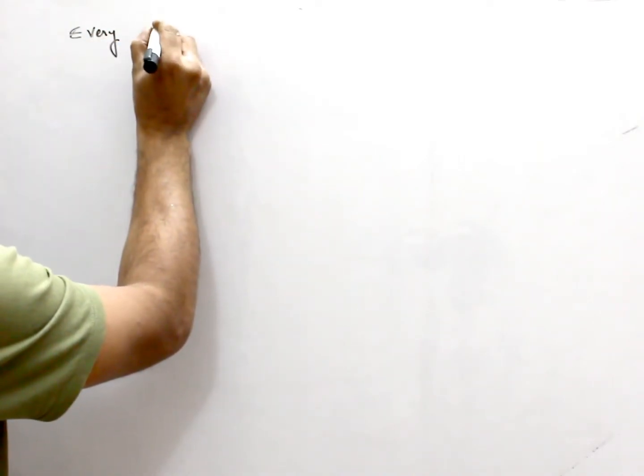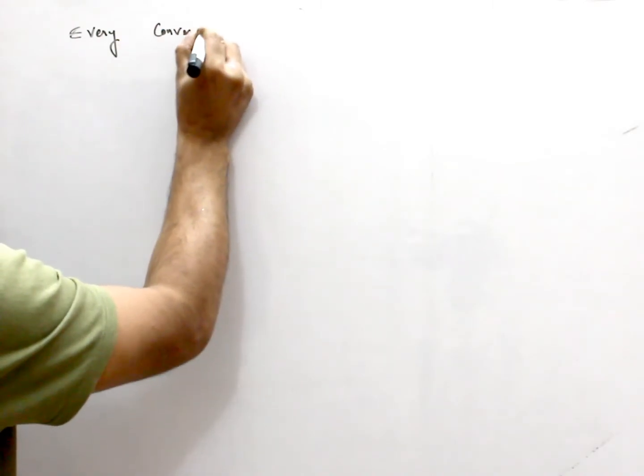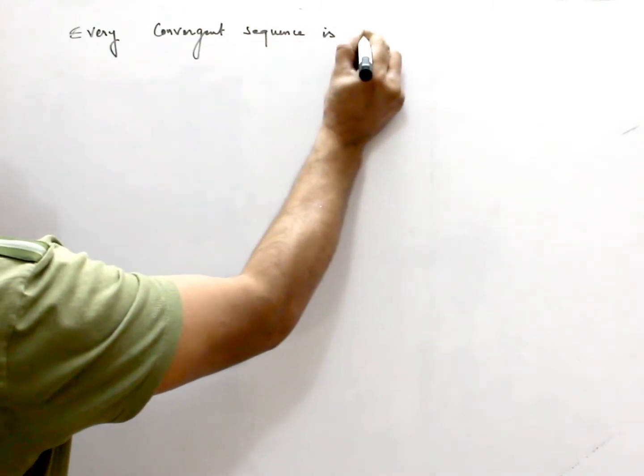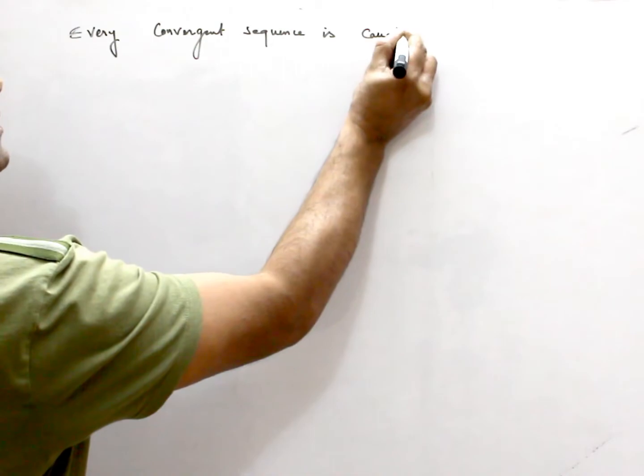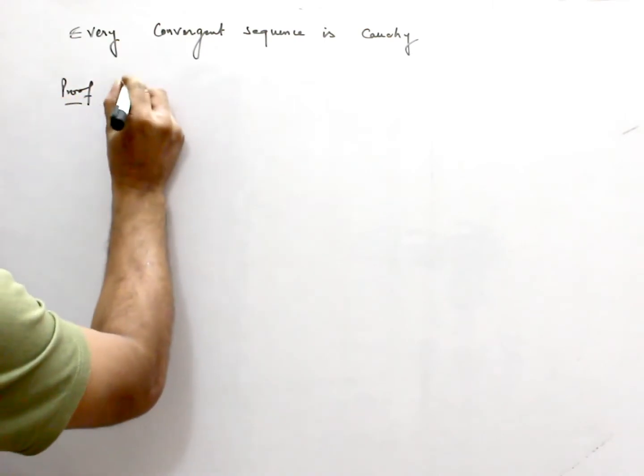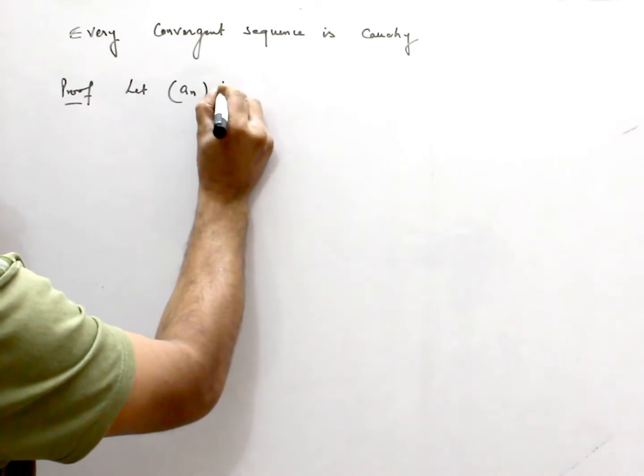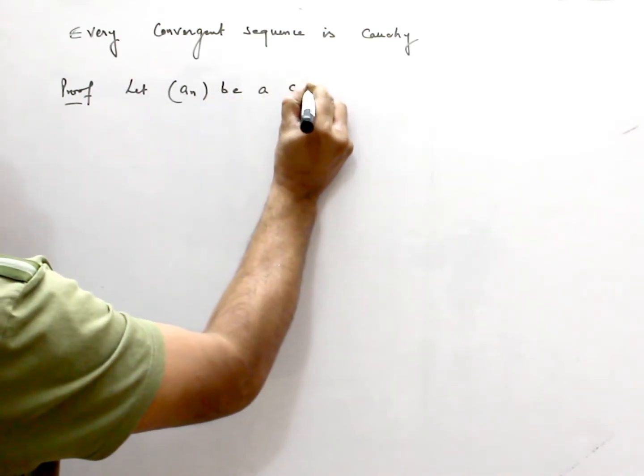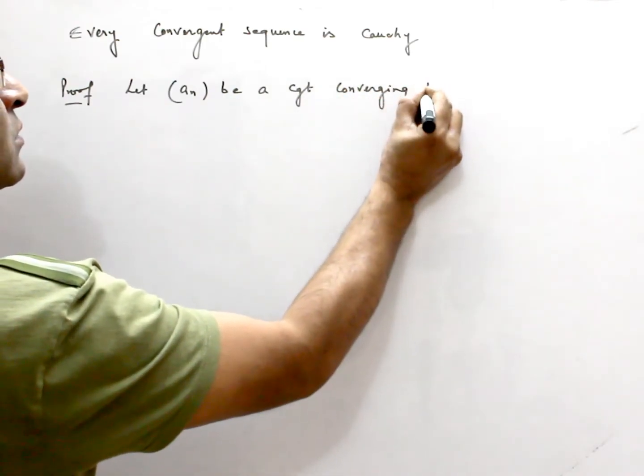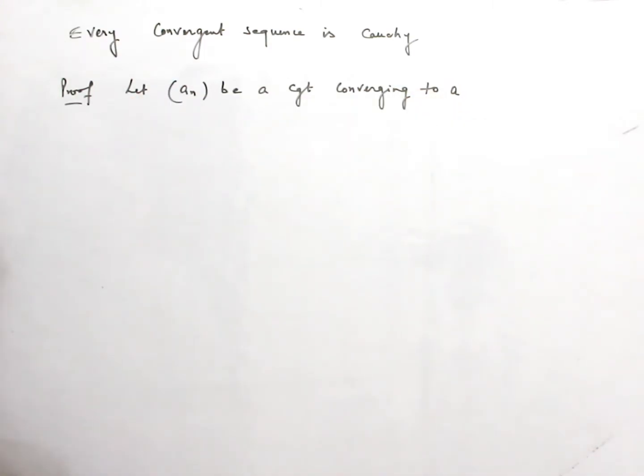Every convergent sequence is Cauchy. So, proof: Let An be a convergent sequence converging to A. Then we show that An is Cauchy.